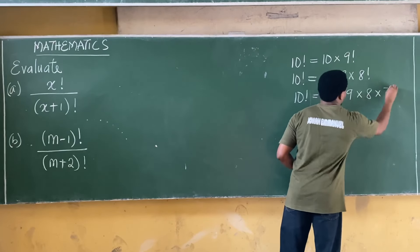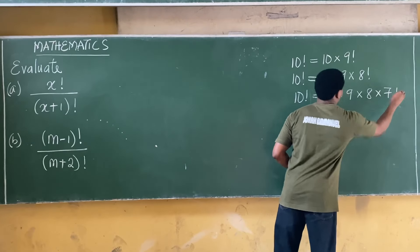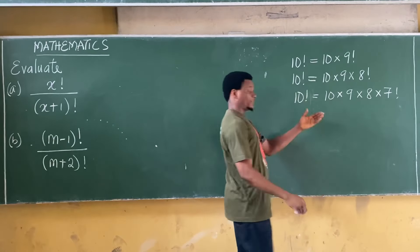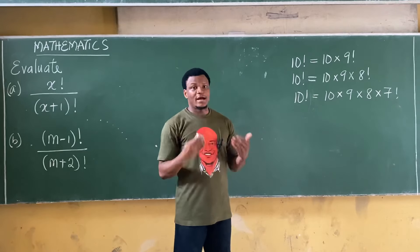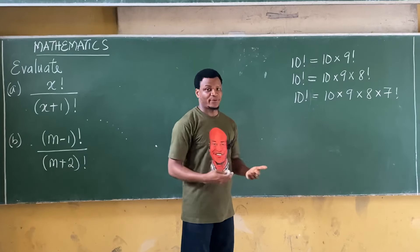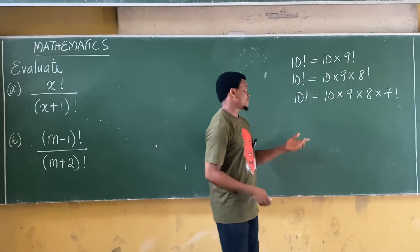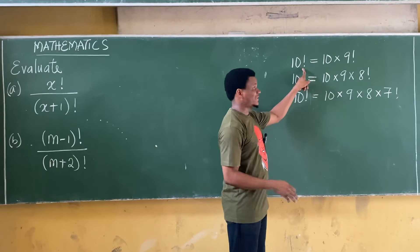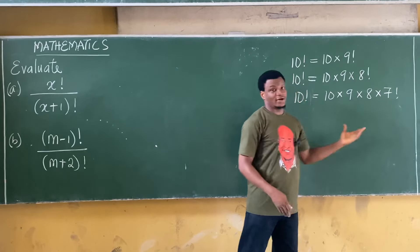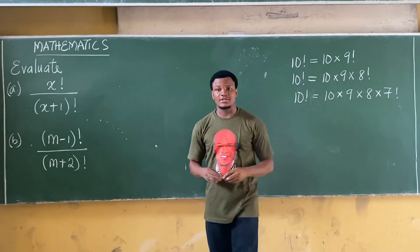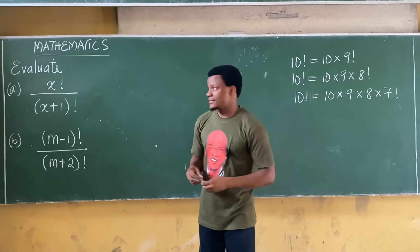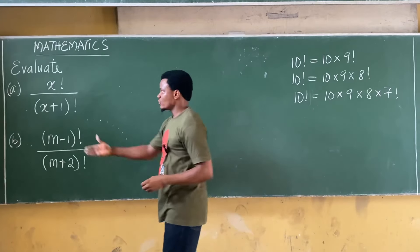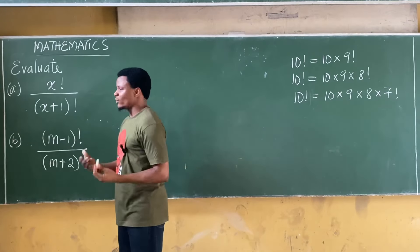We can also say 10! = 10 × 9 × 8 × 7!. So depending on how you want to express it, you can write a bigger factorial in terms of a smaller one, as we discussed in the last class.